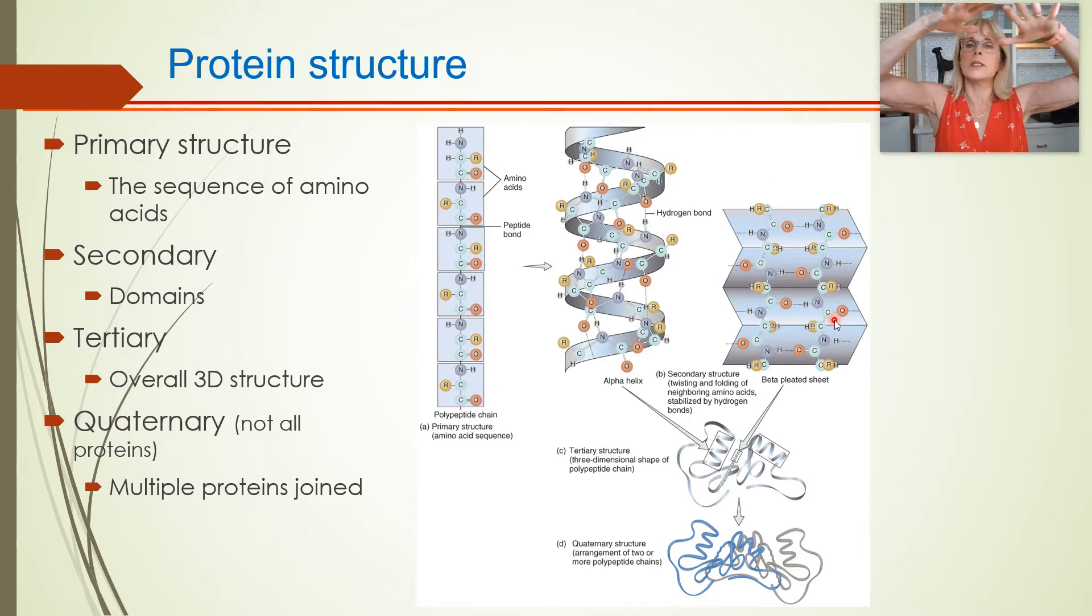whereas a beta pleated sheet is like a platform, something that is broad and stable, and you could put things on.